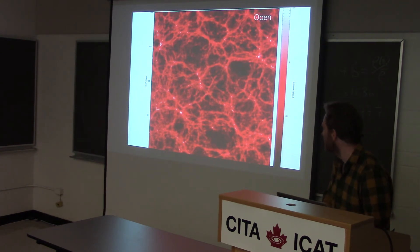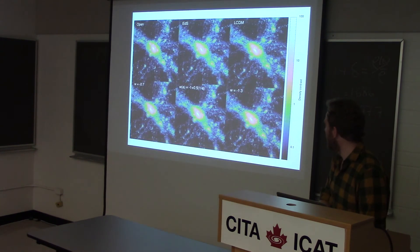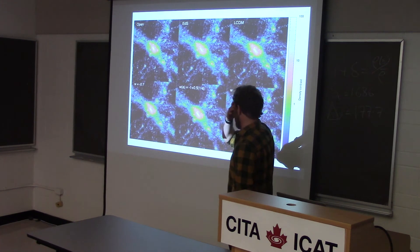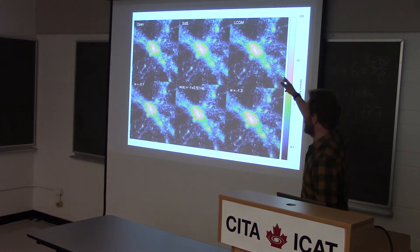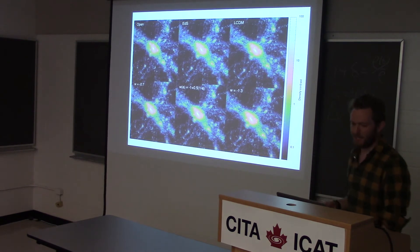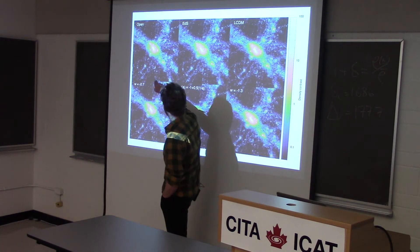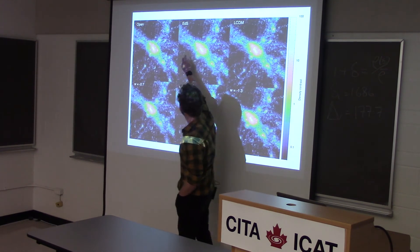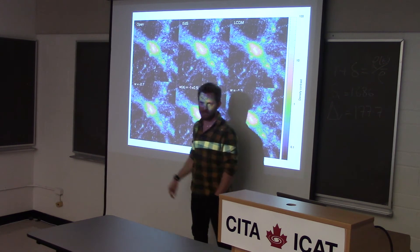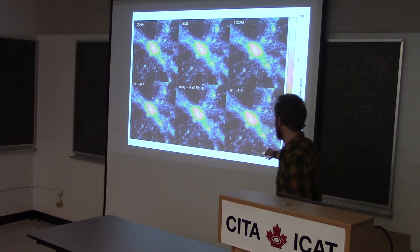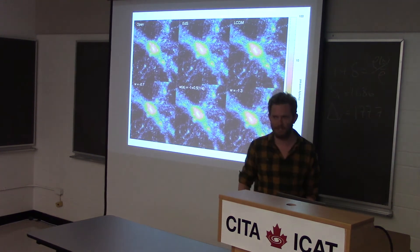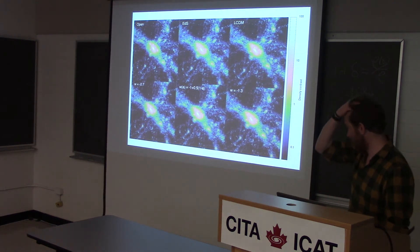Here's a zoom in on a halo in these simulations — several different models: the open, the Einstein–de Sitter, and then different dark energy ones. Looking at the halos, it's quite difficult for the eye to pick out many differences between these things. You might be able to convince yourself that the open model looks slightly denser compared to the Einstein–de Sitter. But all the others you'd be quite hard-pressed to visually identify differences, despite the very different cosmological parameters and different growth factors these models required to reach the same point at redshift zero.